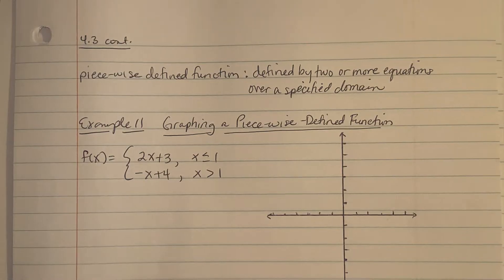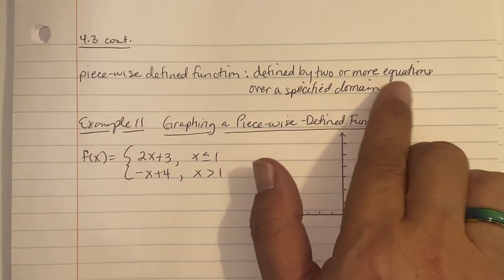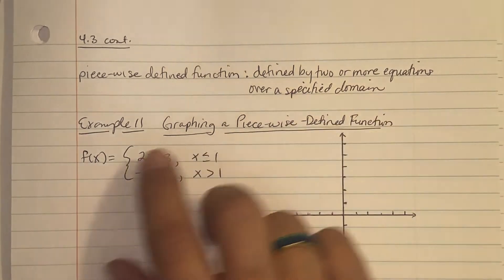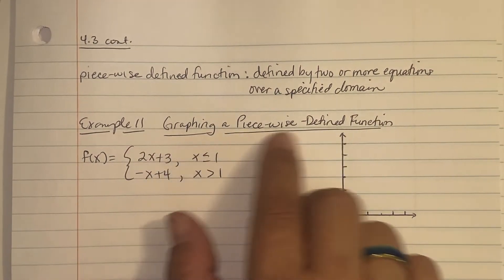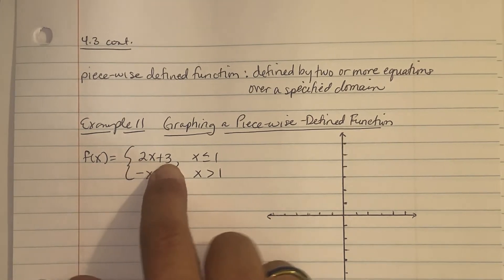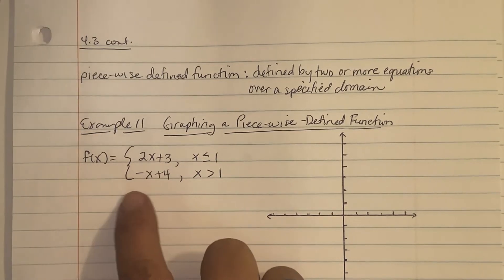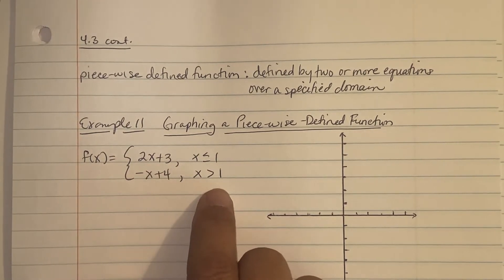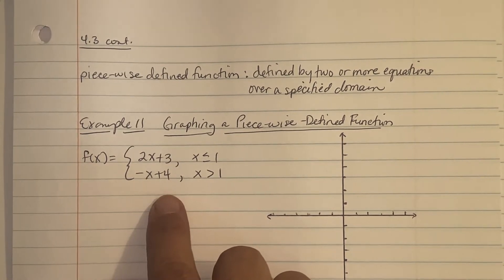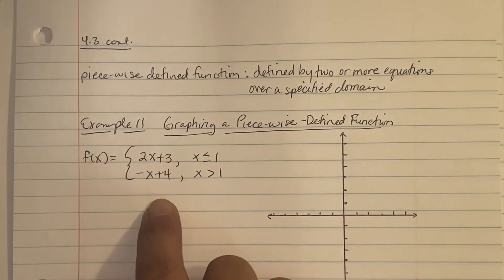A piecewise defined function is defined by two or more equations over a specified domain, meaning the domain has boundaries. For the example, graphing a piecewise defined function: f(x) = 2x plus 3 when x is less than or equal to 1, and f(x) = negative x plus 4 when x is greater than 1. You graph each equation individually using the boundaries as constraints.